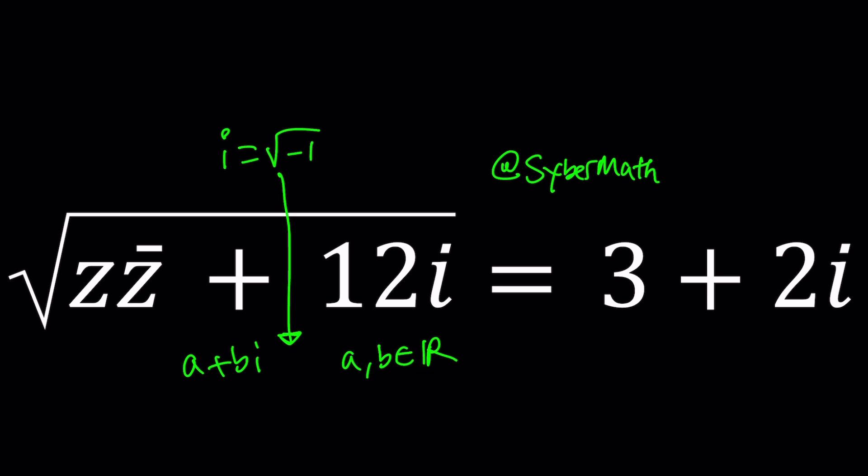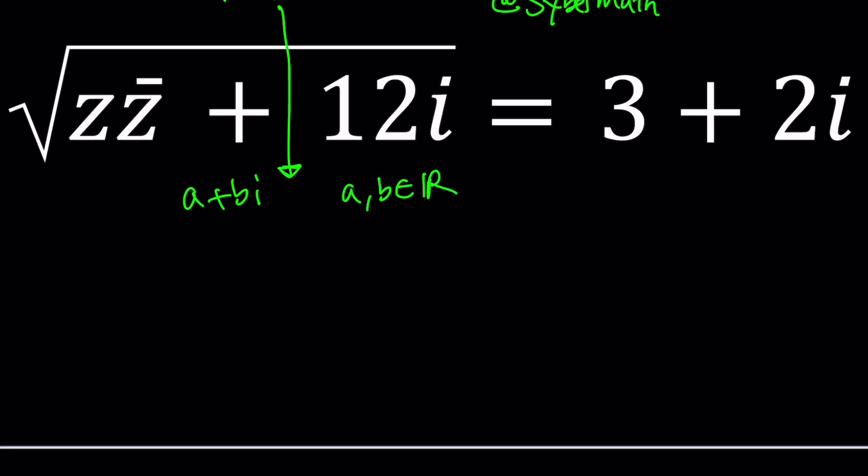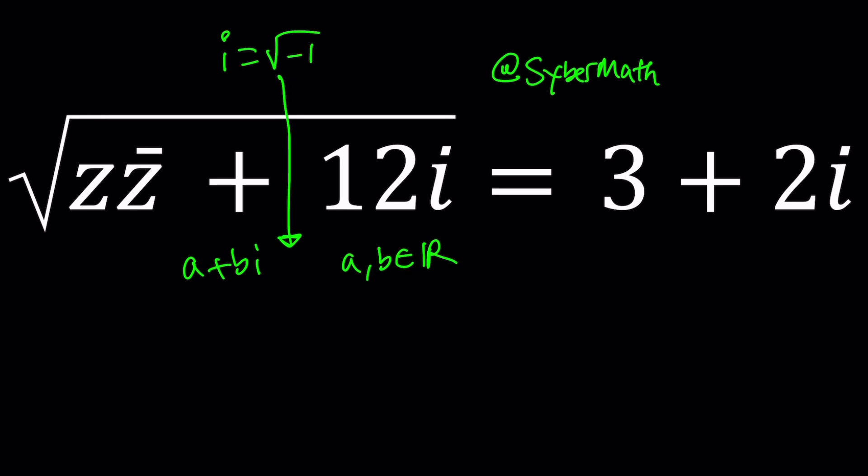So that means we can probably replace z with A plus Bi, right? You could also use x plus yi. It doesn't matter, no big deal. But with locus problems we prefer x plus yi. And the reason behind that is we want to be able to graph it in the coordinate plane so x and y are better suited for that purpose. So let's go ahead and do that. z equals x plus yi.